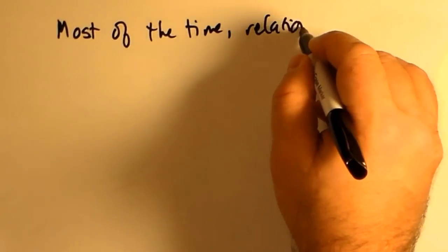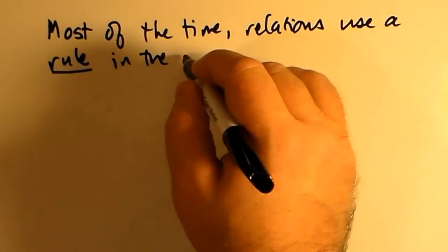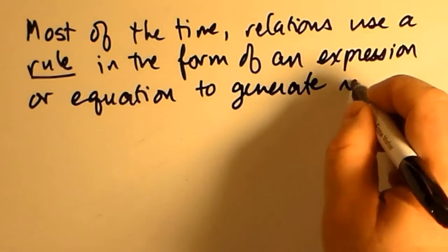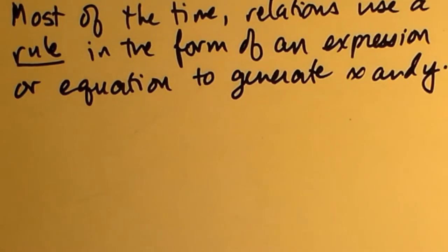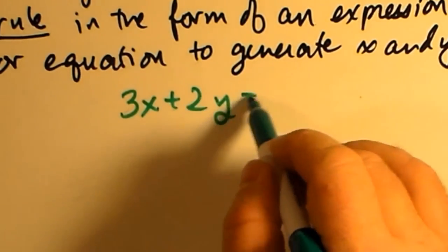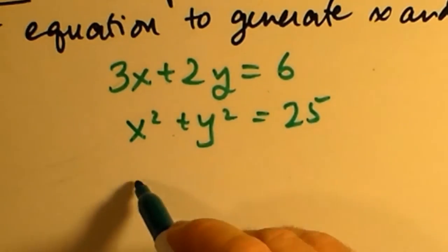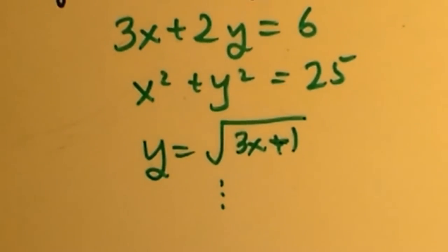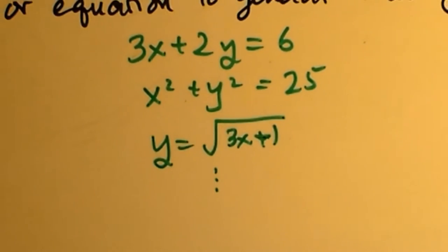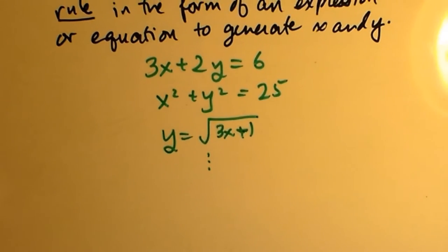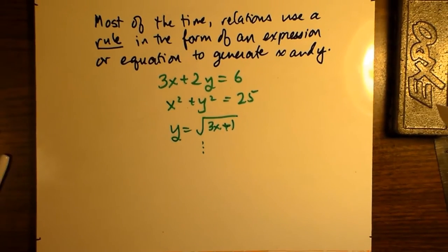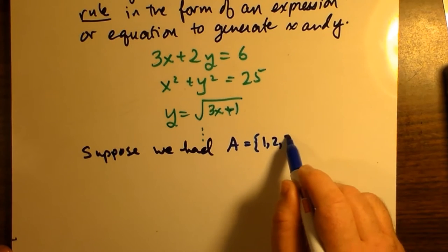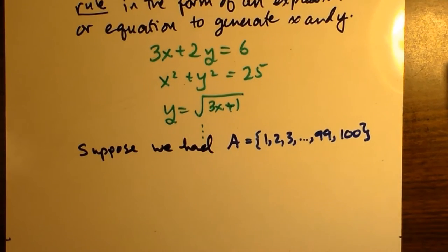Most of the time, relations use a rule in the form of an expression or equation to generate values for x and y. For example, 3x + 2y = 6 defines a line, x² + y² = 25 defines a circle, and √(3x + 1) defines a square root function. The first and last are functions, but x² + y² = 25 is not a function because for every x you can get two y values.